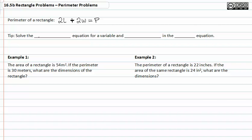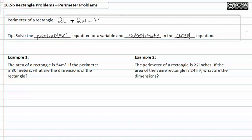Here's the tip that will help you solve these problems in a much more simplified way. Solve the perimeter equation for a variable and substitute it in the area equation. This will make the problem look a lot easier to solve.